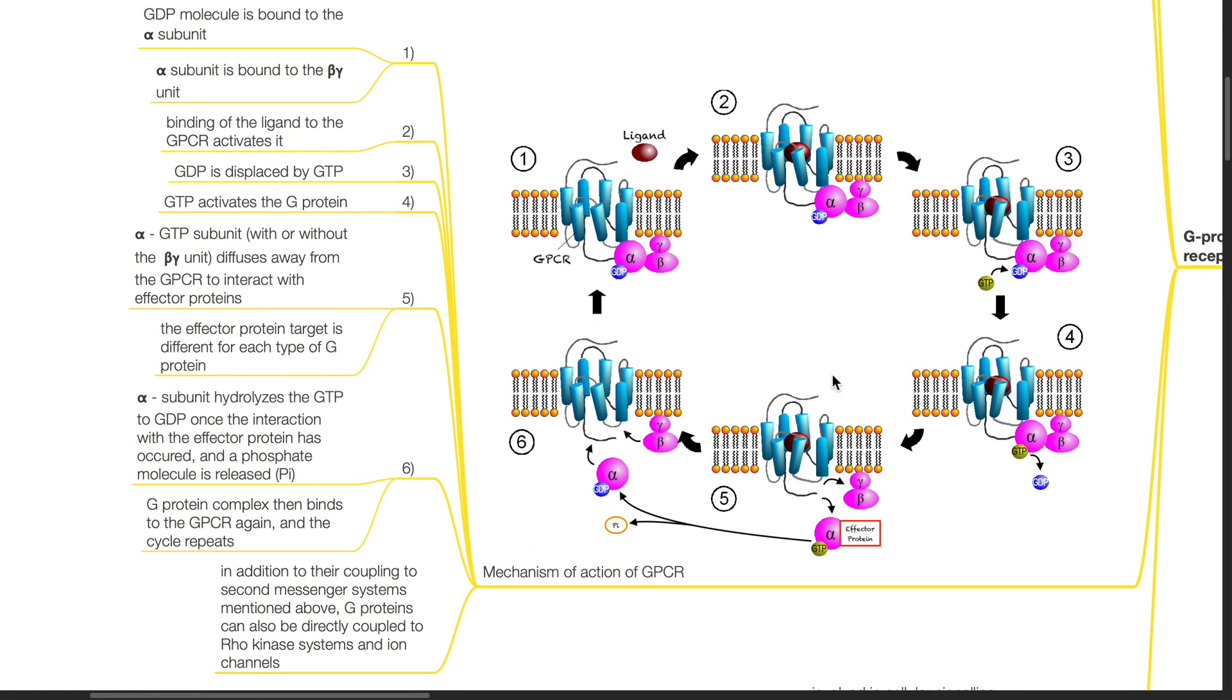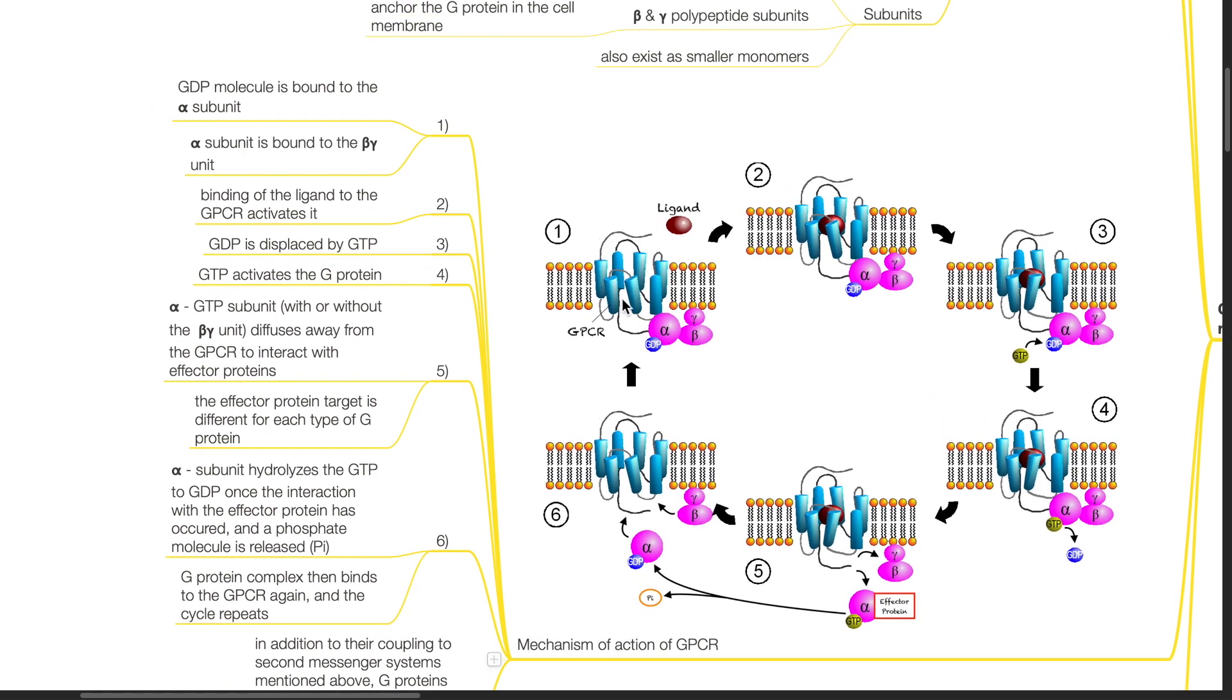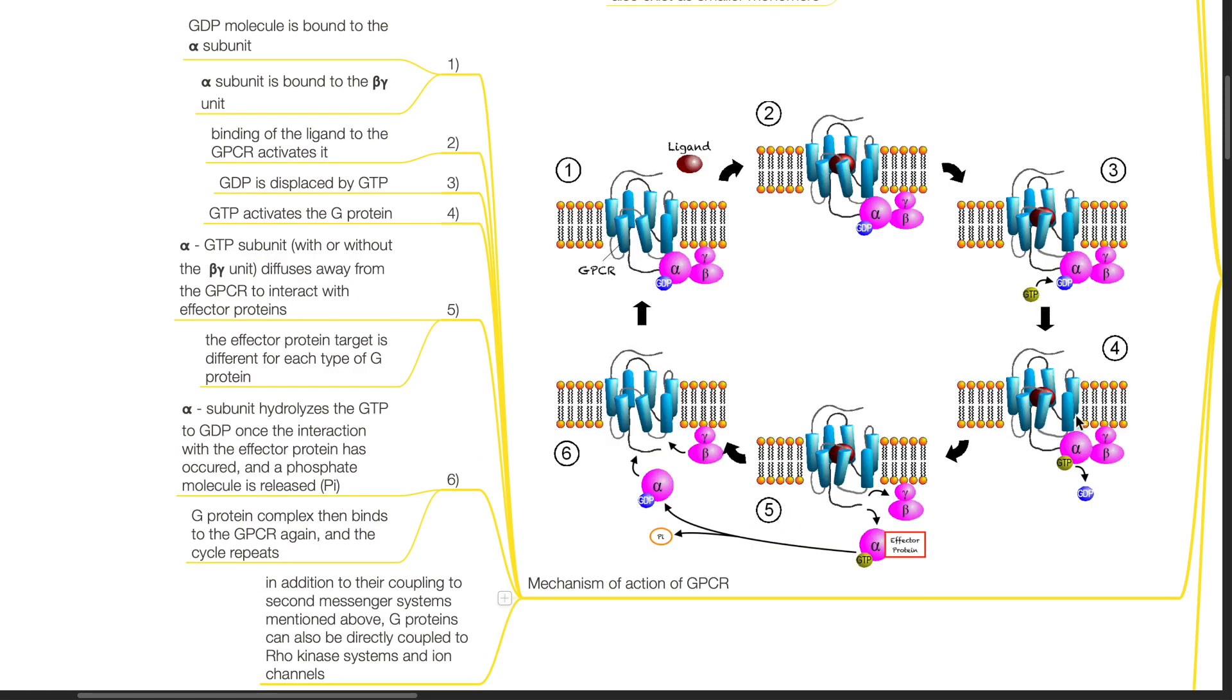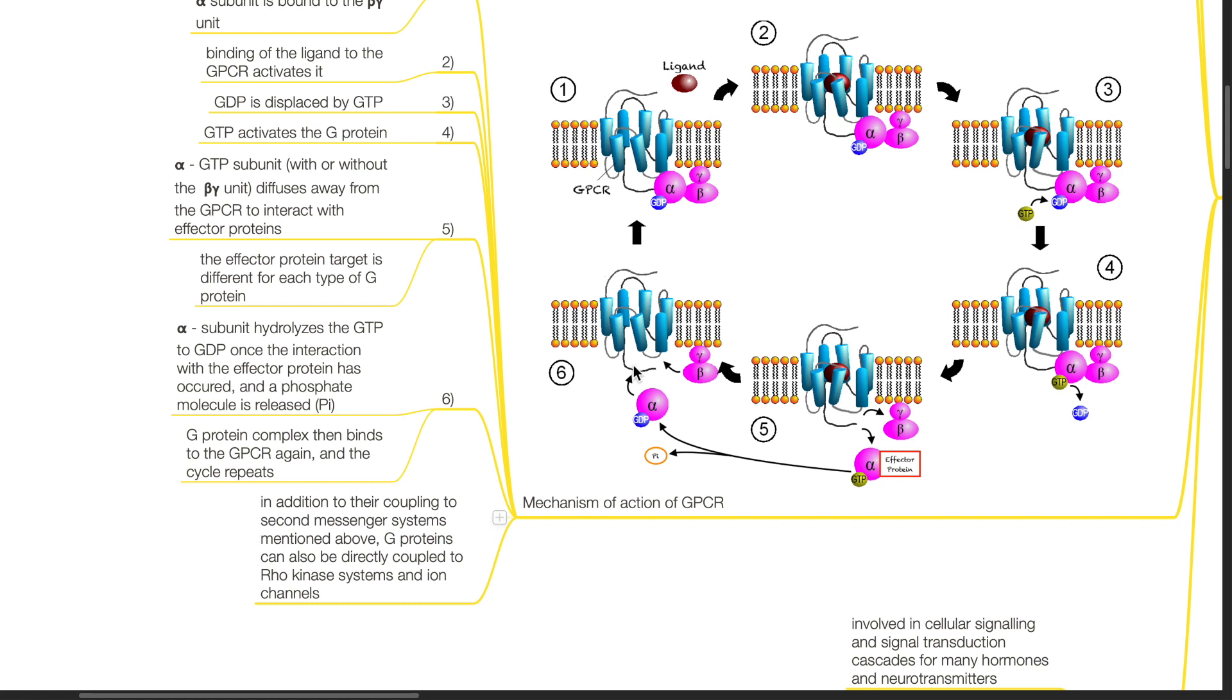Mechanism of action of G-protein coupled receptors: Number one, GDP molecule is bound to the alpha subunit. Alpha subunit is bound to the beta-gamma unit. Number two, binding of the ligand to the GPCR activates it. Number three, GDP is replaced by GTP. Number four, GTP activates the G-protein. Number five, alpha-GTP subunit diffuses away from the GPCR to interact with effector proteins. The effector protein target is different for each type of G-protein. Number six, alpha subunit hydrolyzes the GTP to GDP once the interaction with the effector protein has occurred and a phosphate molecule is released. G-protein complex then binds with the GPCR again and the cycle repeats.